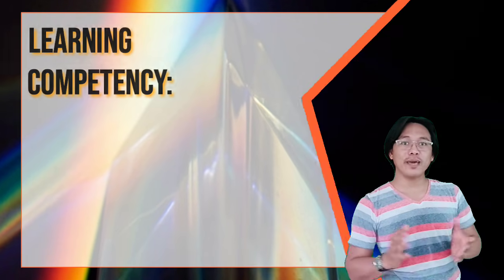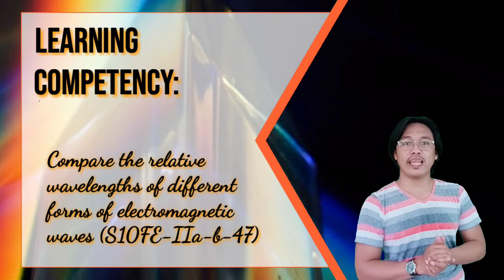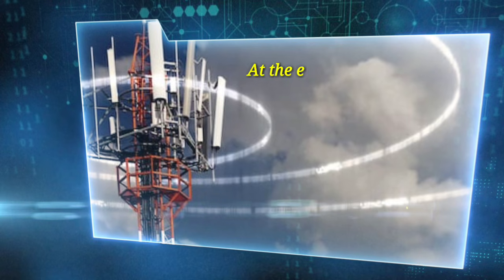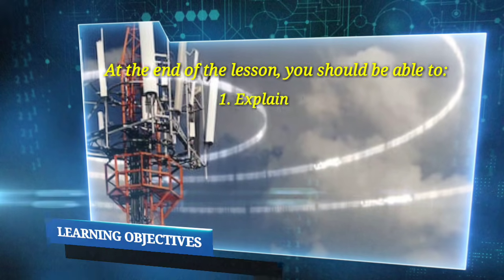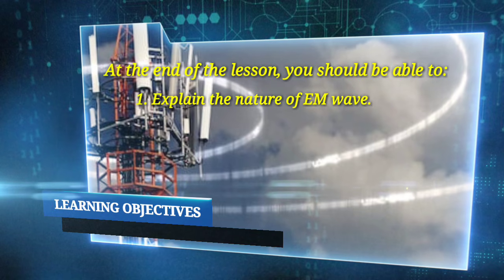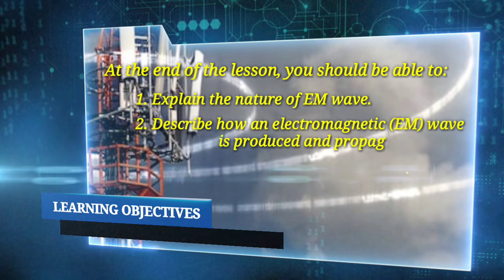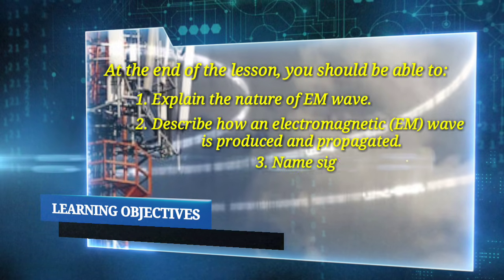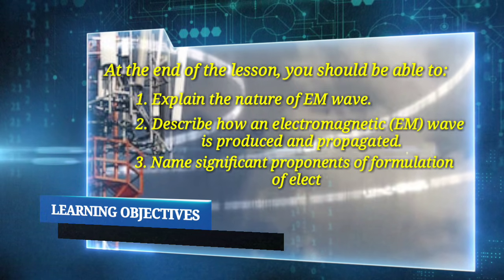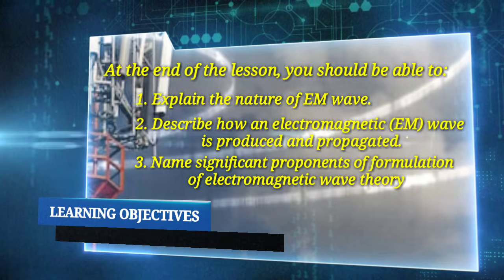Our topic is anchored on the learning competency: compare the relative wavelength of different forms of electromagnetic waves. At the end of the lesson you should be able to: 1. Explain the nature of electromagnetic waves. 2. Describe how electromagnetic waves are produced and propagated. 3. Name significant proponents of the formulation of electromagnetic wave theory.